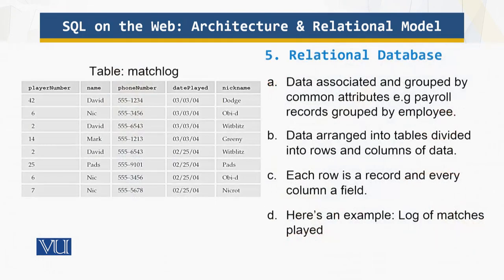A relational database associates groups of records. For example, payroll records grouped by employee, by department, or by salary structure. The data is usually stored in a table where columns are the attributes and rows are the records.